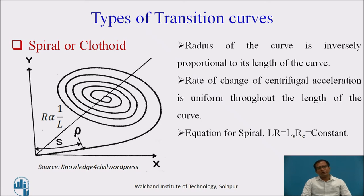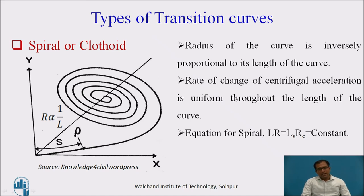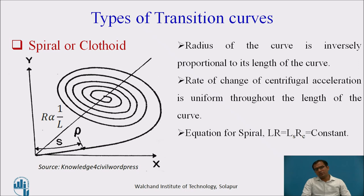Spiral or clothoid: as mentioned, the radius of the curve is inversely proportional to the length of the curve, which takes care of centrifugal acceleration. When the radius is inversely proportional to the length of the curve, the rate of change of centrifugal acceleration is uniform throughout the length of the curve. Using the designed spiral length, we can control the centrifugal acceleration at particular points. Setting out in the field is easy, and execution and construction of the spiral is easy. It is given by L×R = Ls×Rc, that is Ls×Rc = constant C.